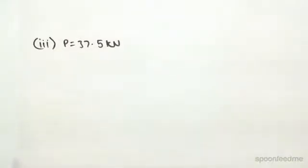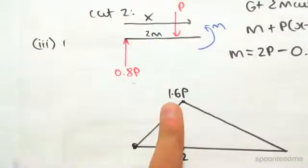Hey guys, we're now going to be looking when P equals 37.5 kilonewtons. So we know that we always want to find our maximum moment first. We've seen that the maximum moment is 1.6P. We've derived that previously.